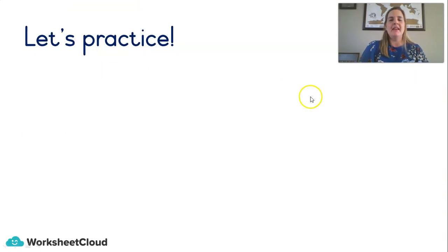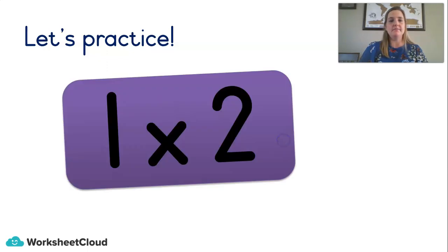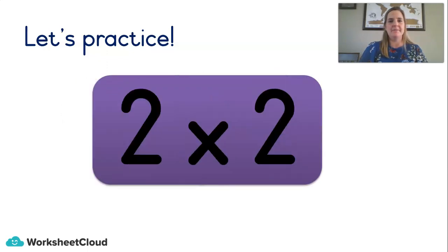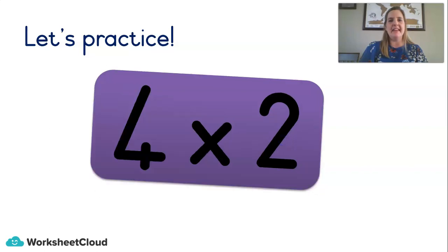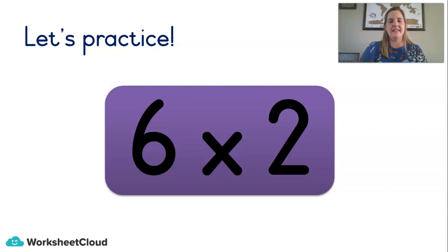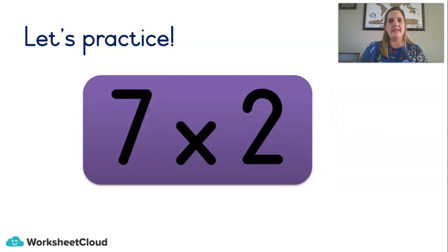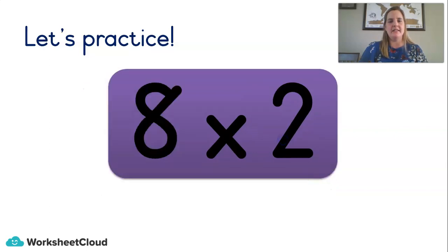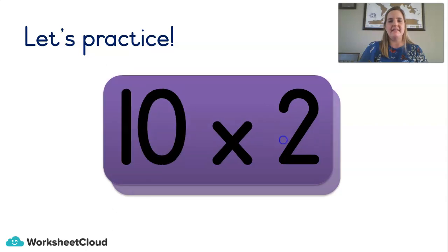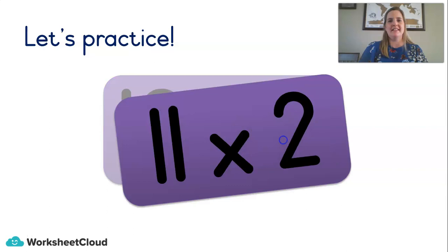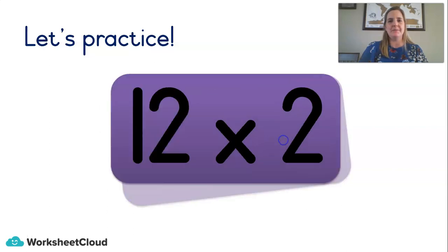The same game — I'll show you a flash card and you try to beat me to the answer. See if you get it right. Two. Four. Six. Eight. Ten. Twelve. Fourteen. Sixteen. Eighteen. Twenty. Twenty-two. Twenty-four. Well done, that's very good.